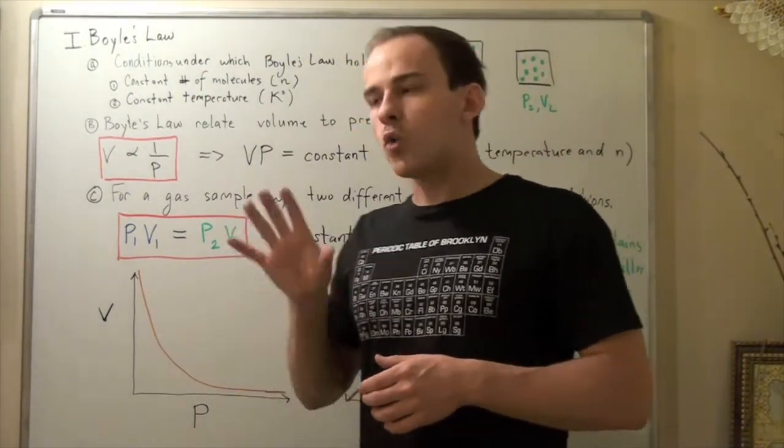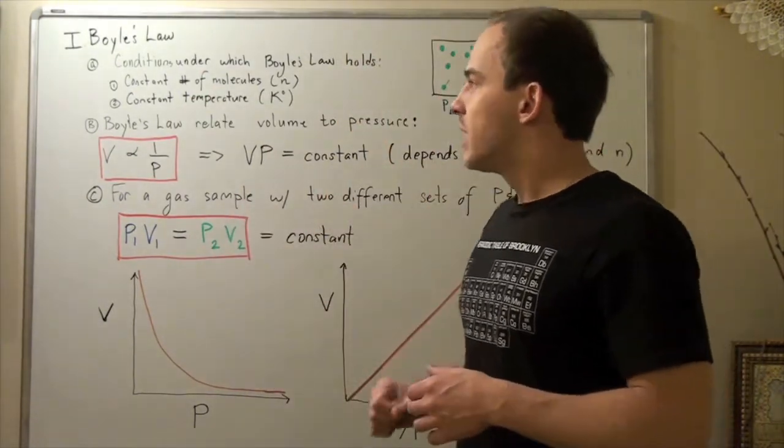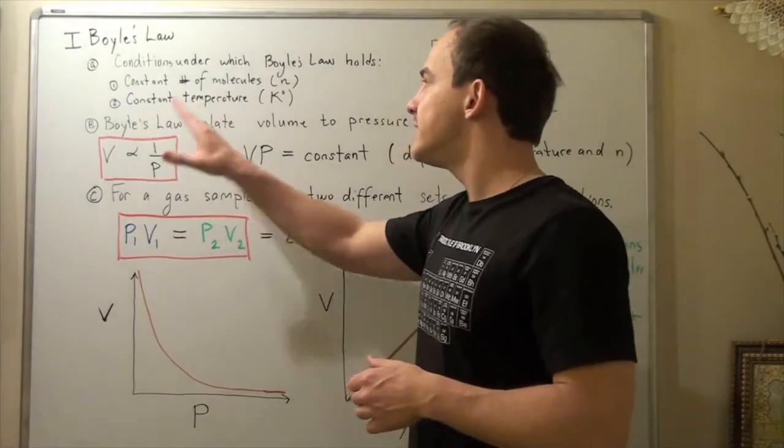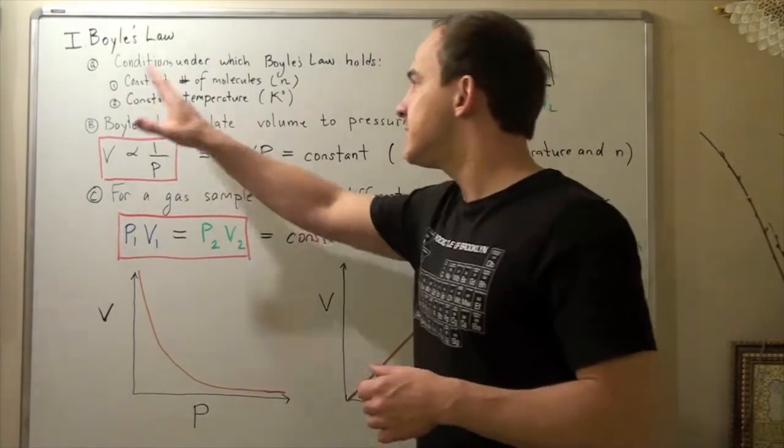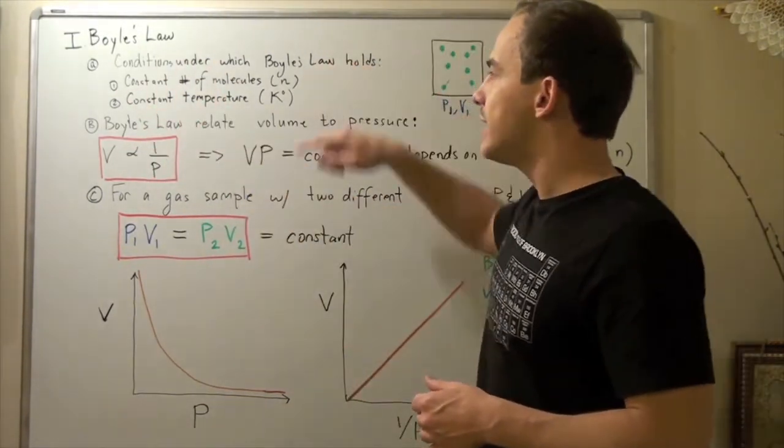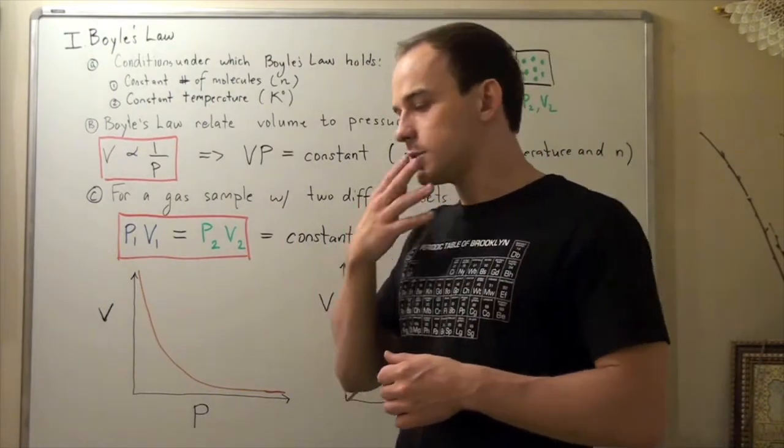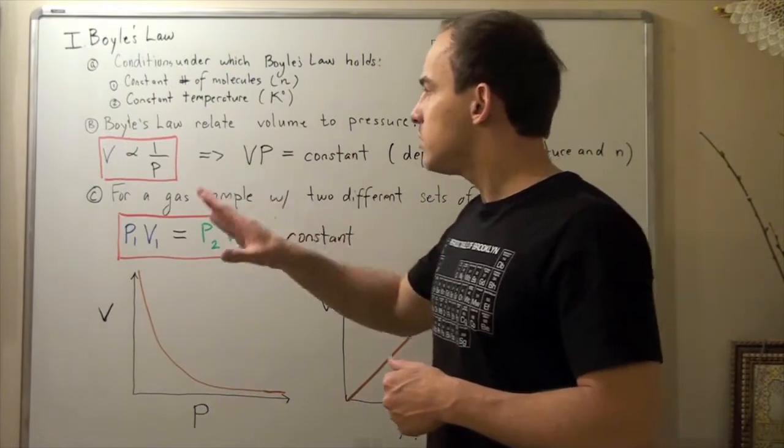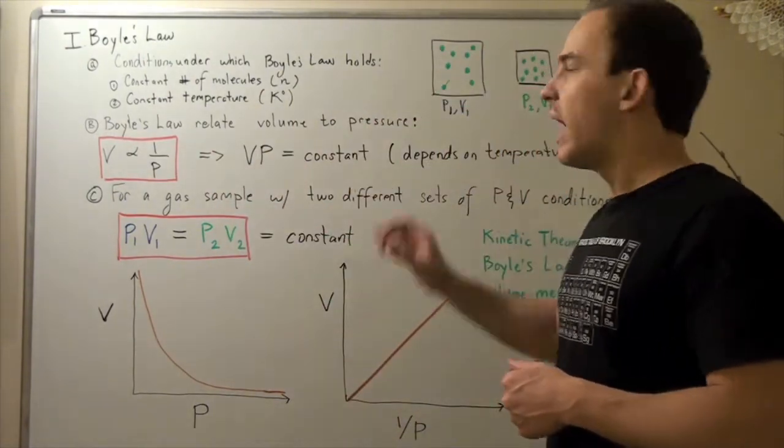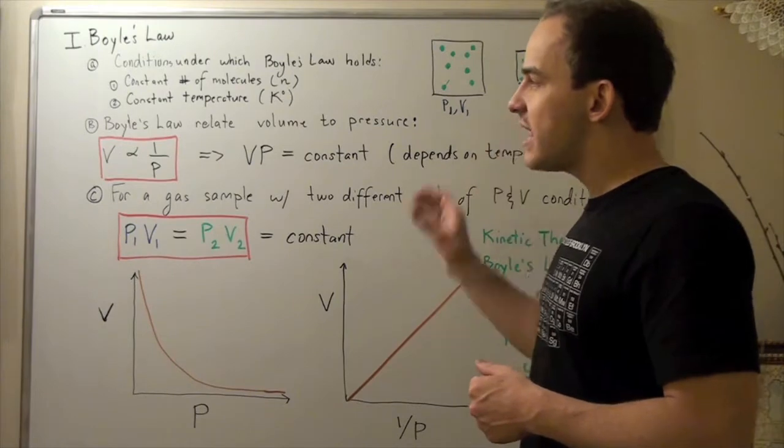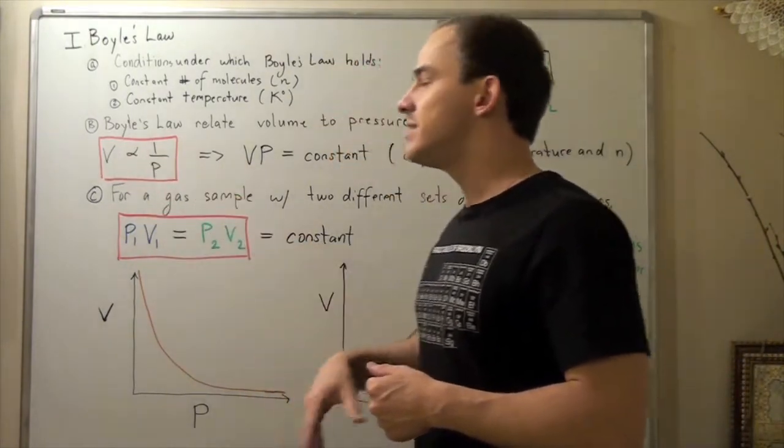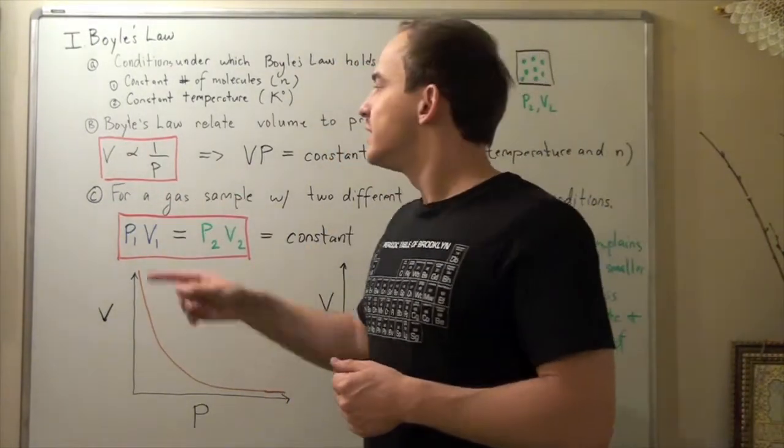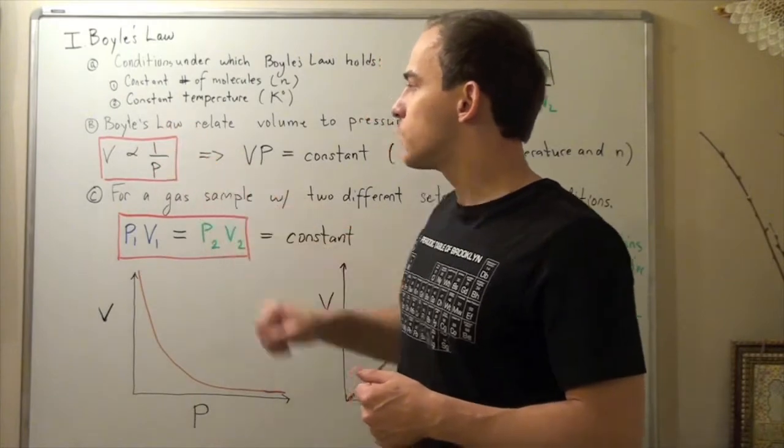Now Boyle's Law works under certain conditions. If we have a constant temperature and constant number of moles, or a constant number of molecules, then we can use something called Boyle's Law. And what Boyle's Law relates is it relates volume and pressure. And what it states is that volume is directly proportional to the inverse of 1 over P.